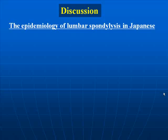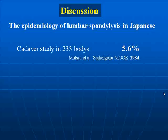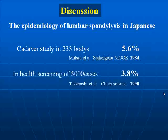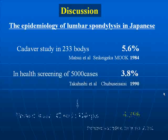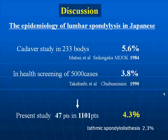Discussion: In prior investigations on the prevalence of spondylolysis in the Japanese general population, Matsui and others, in a cadaveric study of lumbar vertebral specimens, estimated 5.6%. While Takahashi and others, using lumbar spine two-directional radiography like us, arrived at a figure of 3.8%, which was similar to that obtained in our present study.